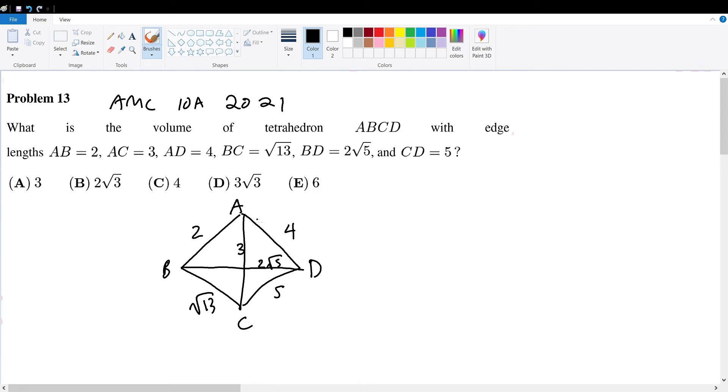Right off the bat, we see triangle ACD has side lengths 3, 4, 5. Since 3-4-5 is a famous Pythagorean triple, this is a right triangle. The sides 3 and 4 must have a right angle between them, so angle CAD is 90 degrees.